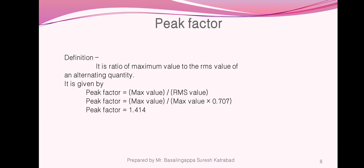Next definition: peak factor. It is the ratio of maximum value to the RMS value of an alternating quantity. Mathematically, peak factor equals maximum value divided by RMS value. Substituting RMS value as V_MAX multiplied by 0.707, the maximum values cancel, giving 1 divided by 0.707, which equals 1.41. Peak factor is used for designing the maximum voltage level, and in insulation designing we use the peak factor to decide the insulation level.